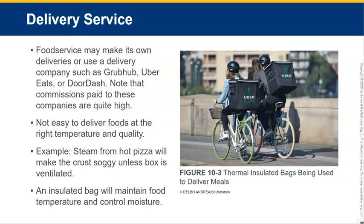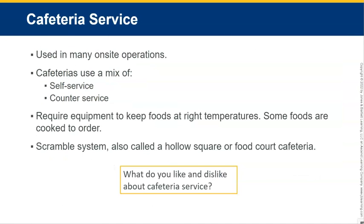An example of this would be steam from hot pizza making the crust soggy unless the box is ventilated. An insulated bag will help maintain food temperature and control moisture. You can picture Uber Eats — they use thermal bags. Domino's similarly uses thermal insulated bags to make sure the pizza maintains its temperature during delivery.